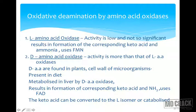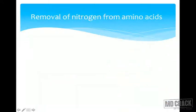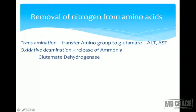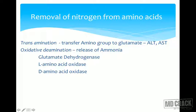The keto acid that is formed is either converted to its L-isomer or further catabolized. To summarize how nitrogen is removed from amino acids: there is transamination — transfer of the amino group to glutamate, involving ALT and AST — and oxidative deamination, which releases ammonia directly by glutamate dehydrogenase, L-amino oxidase, and D-amino oxidase.